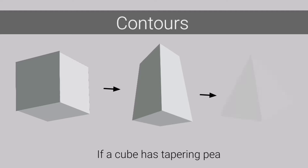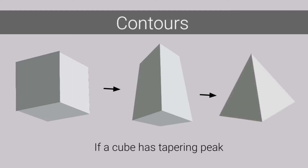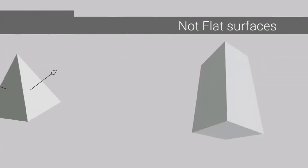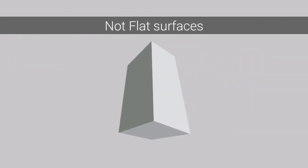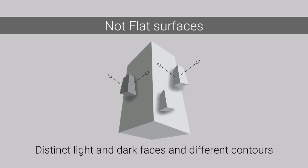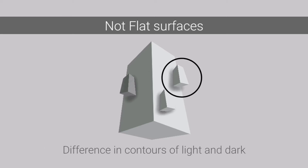Similarly, if a cube has a tapering peak, it will also have the same faces and same light and dark contours. As you all know, mountains aren't flat — they have other forms, ridges on their surface. Other forms on surfaces would also have distinct light and dark faces and different contours, but there would be a difference in contours of light and dark with respect to the light direction.